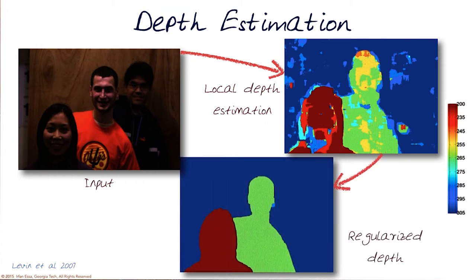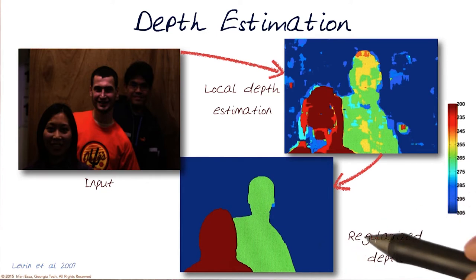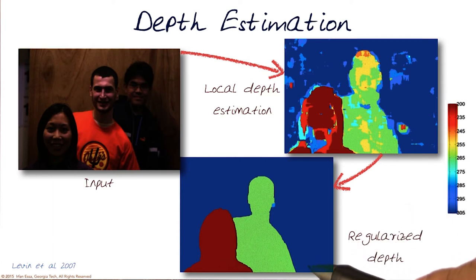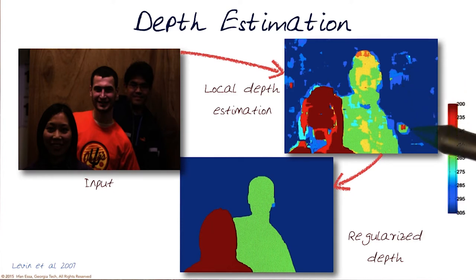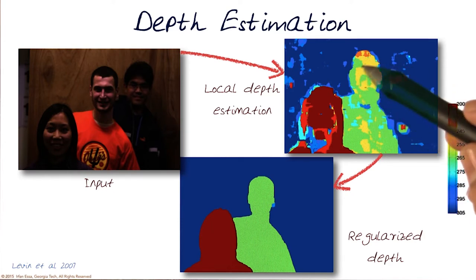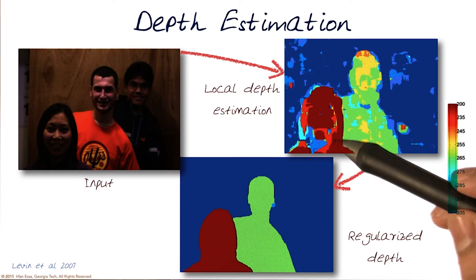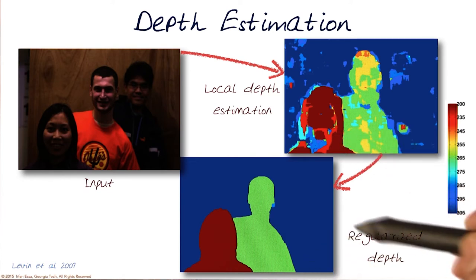They actually came up with an algorithm that would regularize the depth to be able to generate an image like this. Regularization is basically one of the best ways of smoothing out the information, and that's the way these kinds of details were gotten rid of, allowing you to generate a much better mask for depth. After doing regularization, you can actually get a much better sense of depth.